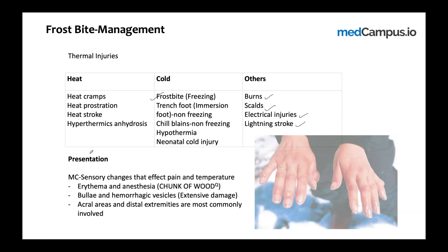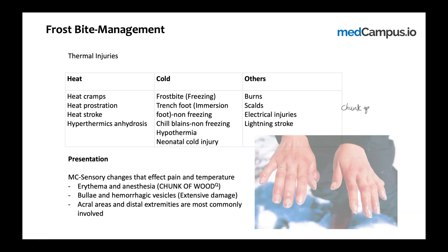Regarding the presentation of frostbite: it is a freezing cold injury that mainly affects the sensory system, particularly pain and temperature modalities. The patient will have erythema, pain, and importantly, anesthesia of the peripheries. The most commonly involved areas are the acral areas and distal extremities. You can see bullous vesicles, which sometimes become hemorrhagic in severe cases. The anesthetic effect is characteristically described by the patient as the feeling of a 'chunk of wood' — this can be a clue in a clinically framed MCQ.